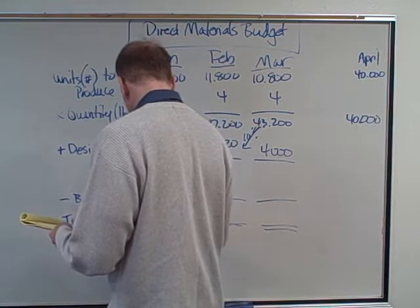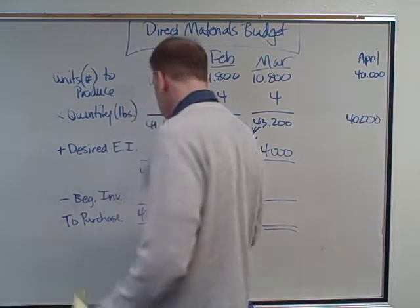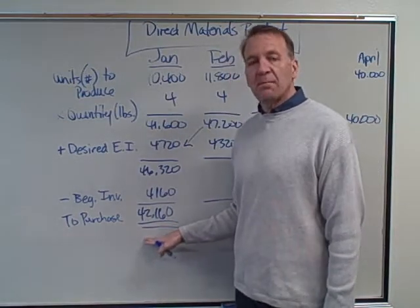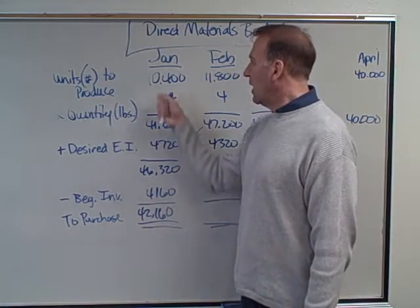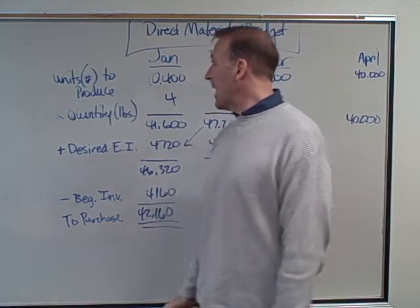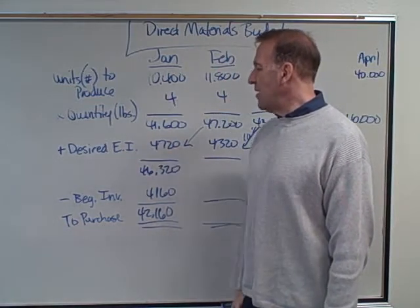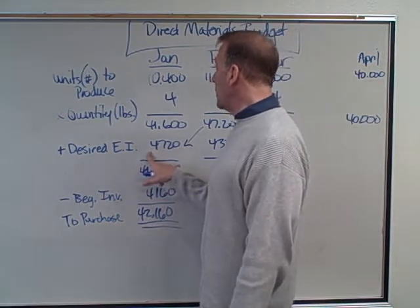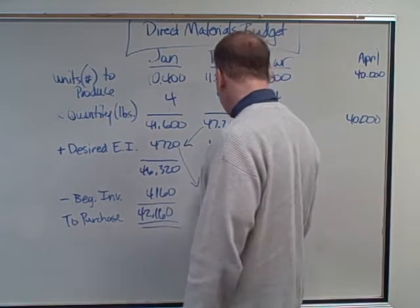Subtracting beginning inventory of 4,160 from total needs of 46,320, we get 42,160 pounds of tomatoes to purchase in January to manufacture 10,400 cases of salsa. This January ending inventory of 4,720 then becomes the beginning inventory for February.